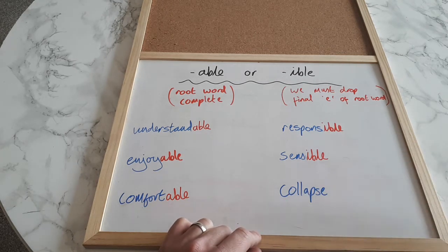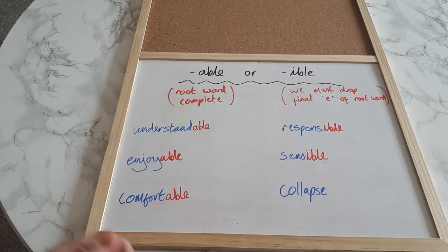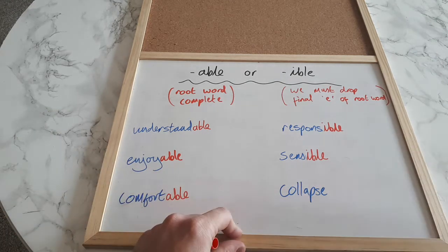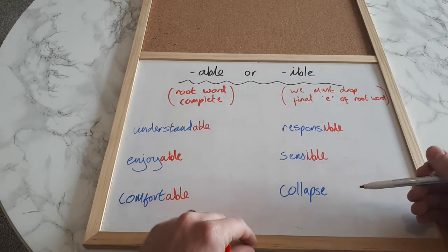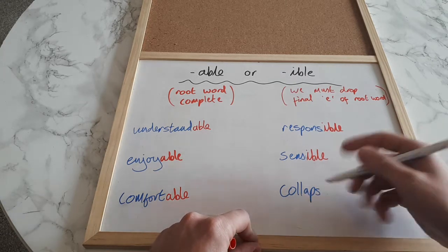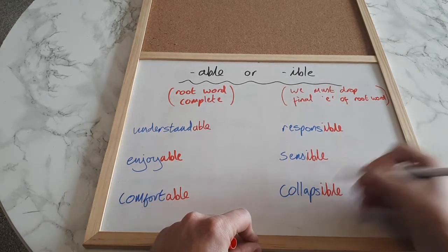So the adjective would be collapsible. So if something's collapsible it might be a tent that can be folded away quickly or a collapsible mast on a boat. Something that can be folded away really quickly is sometimes called collapsible. It can collapse back down into a packet. So collapse becomes collapsible. What do I need to do? That's it. Remove the e and add my -ible ending.